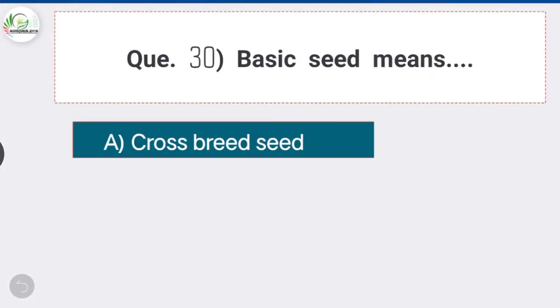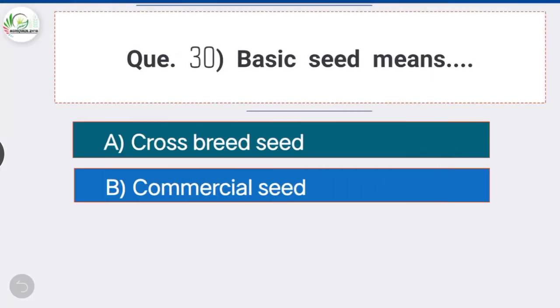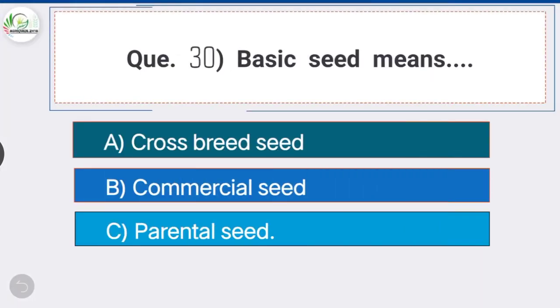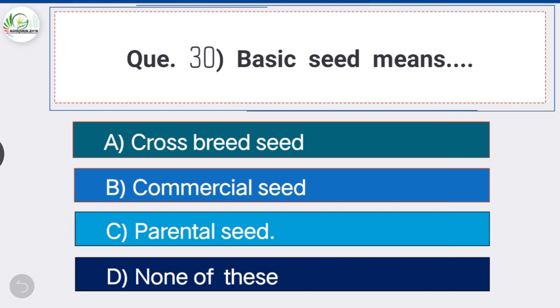Question thirty: basic seed means — option C is the correct answer — parental seed. Parental seed means the silkworm seed used to generate seed cocoons for commercial seed production.